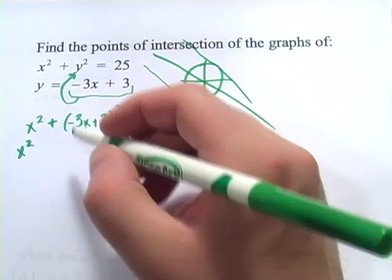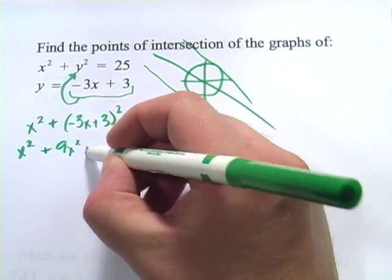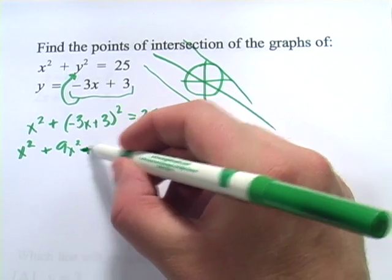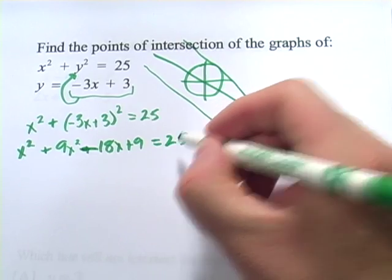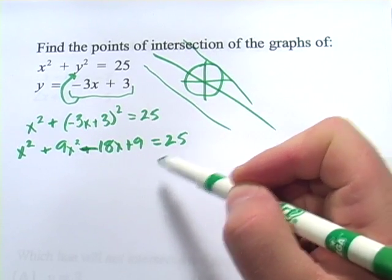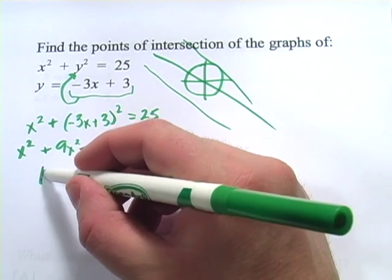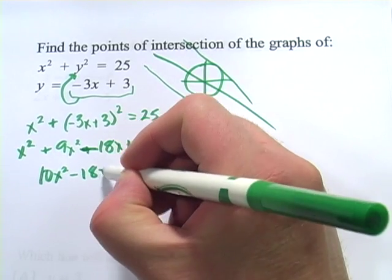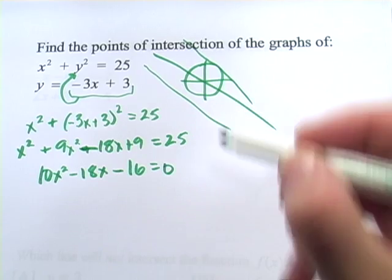Let's see. I'll get x squared and let's multiply this out. We should get 9x squared minus 18x plus 9 equals 25. And then if we do some combining like terms and I'll subtract 25 from both sides to set this thing equal to 0, since it's a quadratic, we should get 10x squared minus 18x minus 16 equals 0.